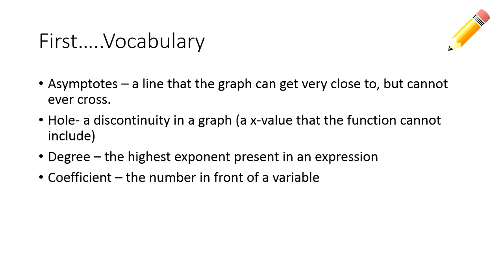First things first, we need some vocabulary and just to remember some things. First vocabulary word: asymptotes. We've heard these before. An asymptote is a line that the graph can get very close to, but you cannot cross an asymptote. Basically it can hug, but not touchy.